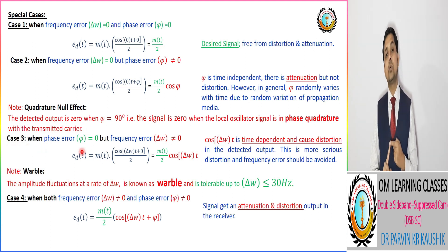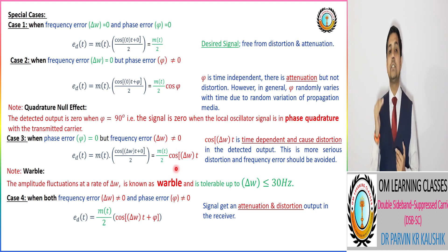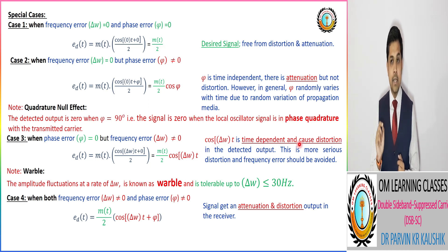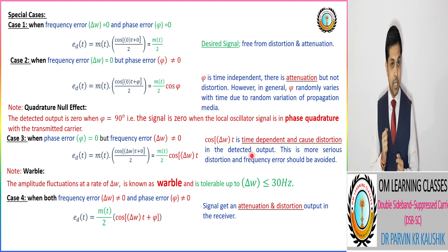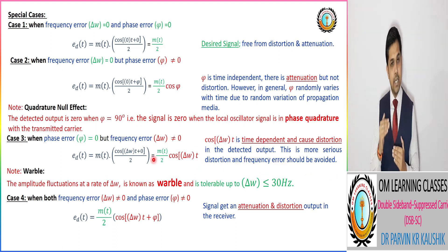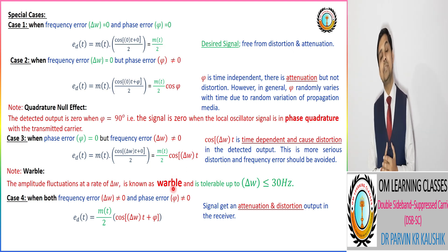In the third case, the phase error is zero but there is a frequency error. The output e(t) = m(t)/2 × cos(Δω·t), where Δω is the frequency error. Since cos(Δω·t) is time-dependent, it causes distortion in the detected output. This is a more serious distortion, and the frequency error must be avoided. The amplitude fluctuation at rate Δω·t is known as warble.